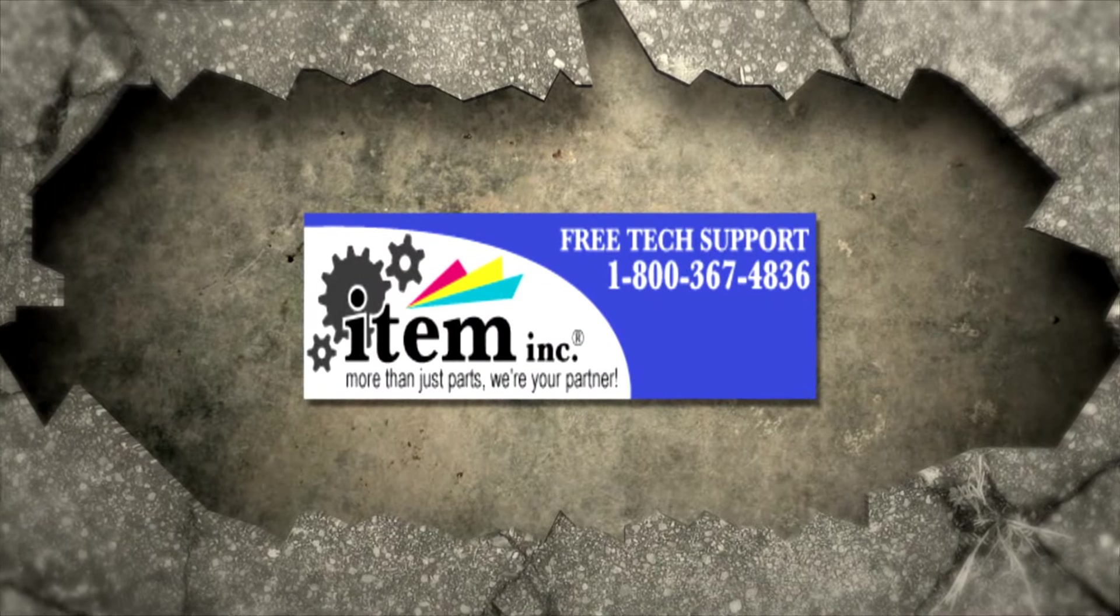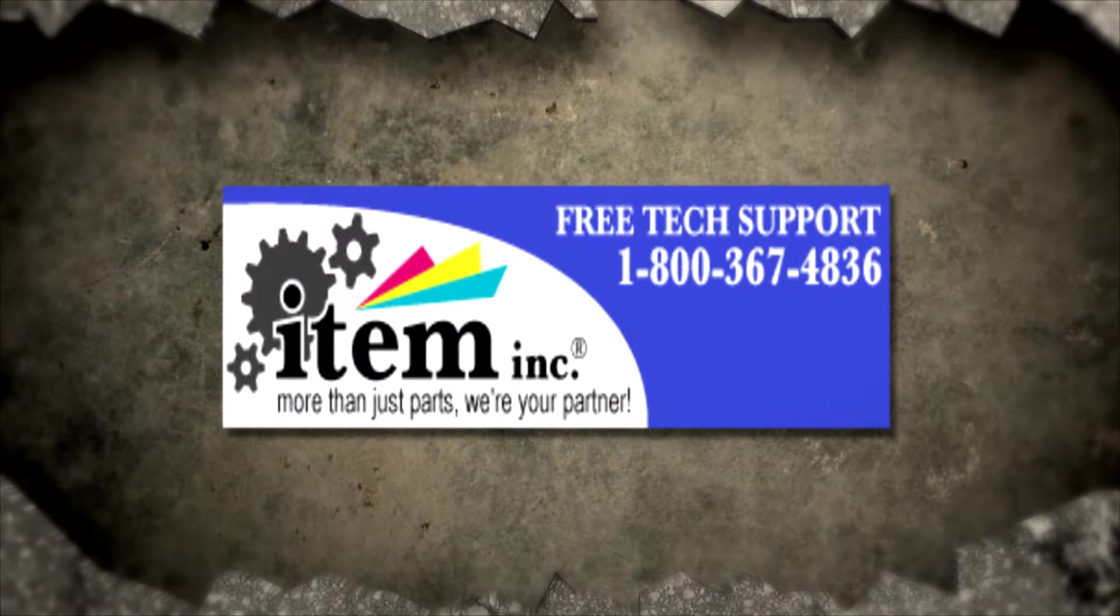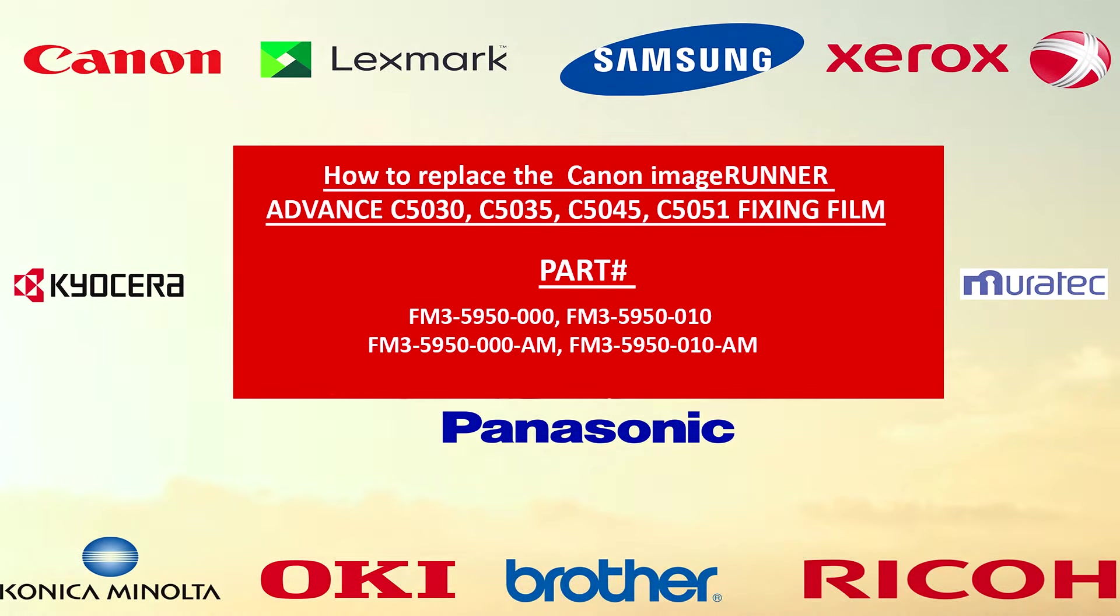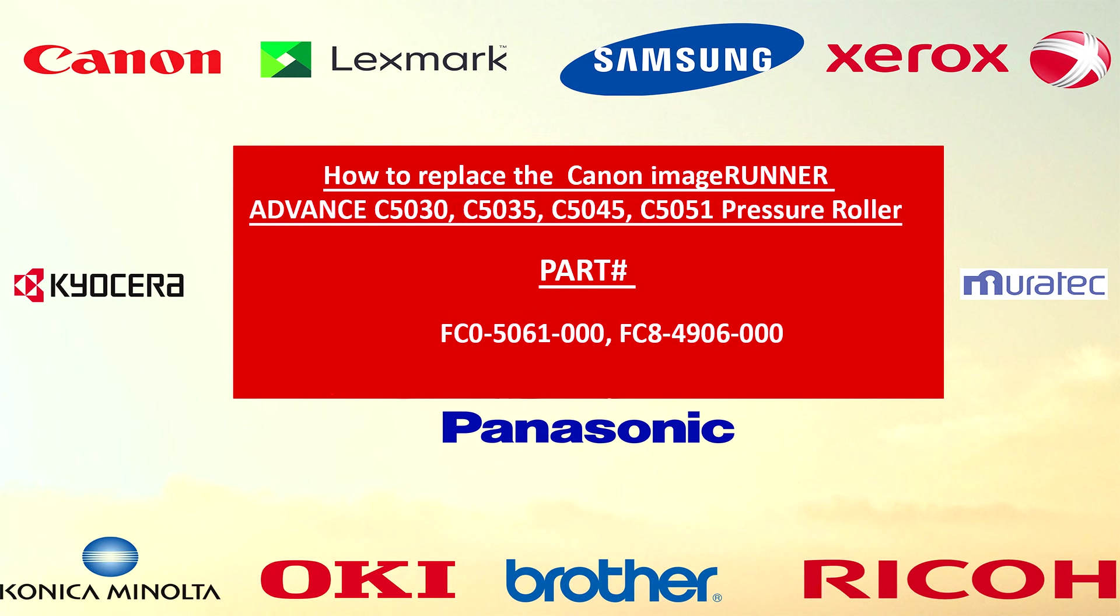Hey guys, welcome to another item in production. My name is Tech009 and today we're going to show you how to replace the fixing film and the pressure roller on a fuser unit for the following Canon machines: image runner advanced c5030, c5035, c5045 and c5051. I have included links for the part numbers in the description.